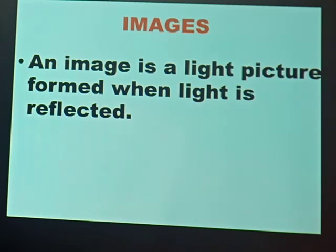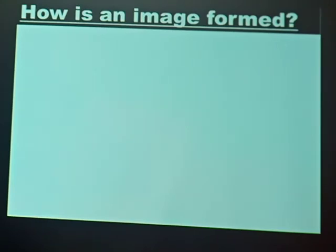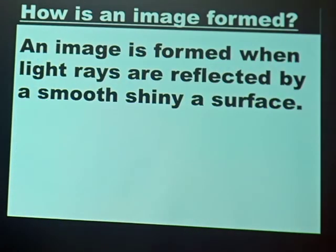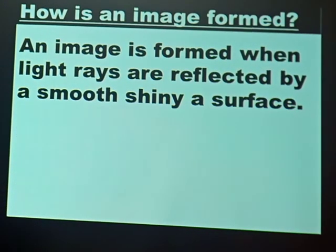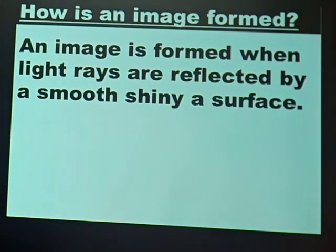So what is an image? An image is a light picture formed when light is reflected. An image is formed when light rays are reflected by a smooth, shiny surface. Remember, it is smooth, shiny surfaces that reflect light.